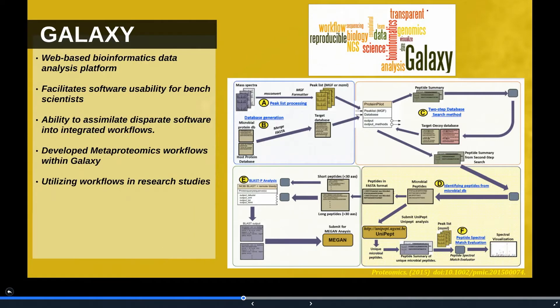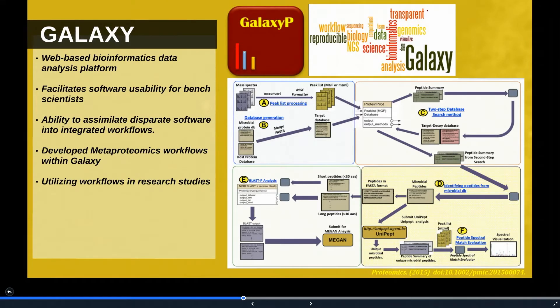Galaxy is an open-source bioinformatics platform which utilizes a web-based interface. Galaxy P, an extension of Galaxy platform for mass spectrometry-based proteomics research, houses the resource required for metaproteomic analysis in a user-friendly interface.